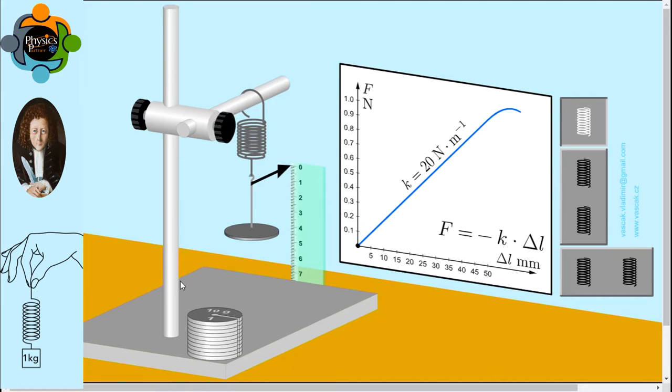So according to Hooke's Law, the applied force F equals the constant k times the displacement or change in length. You can see on the screen the force is denoted by the letter F and the unit is newton. Delta L is used for change in the length, and k is the spring constant.